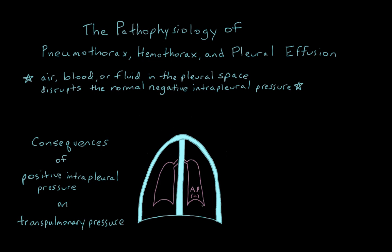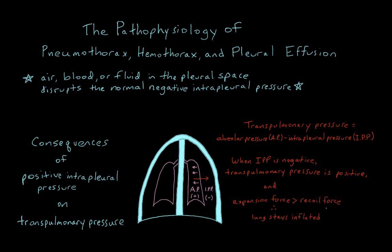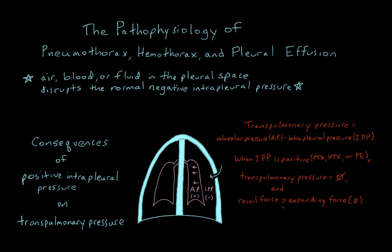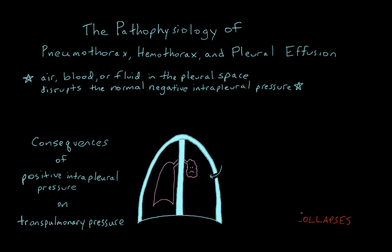A positive intrapleural pressure, in turn, alters the transpulmonary pressure. Under normal conditions, when the intrapleural pressure is negative, the transpulmonary pressure gradient is positive — directed outwards towards the chest wall from the relatively positive alveolar pressure outwards towards the relatively negative intrapleural pressure, counteracting the natural recoil tendency of the lung and keeping it fully expanded. When air, blood, or fluid enters the pleural space, however, the intrapleural pressure becomes positive and the transpulmonary pressure gradient is eliminated. The transpulmonary pressure is zero. And because the elastic recoil force of the lung is now unopposed, the lung collapses. Collapsed lungs do not exchange gas very well, resulting in the dyspnea and hypoxemia seen clinically.